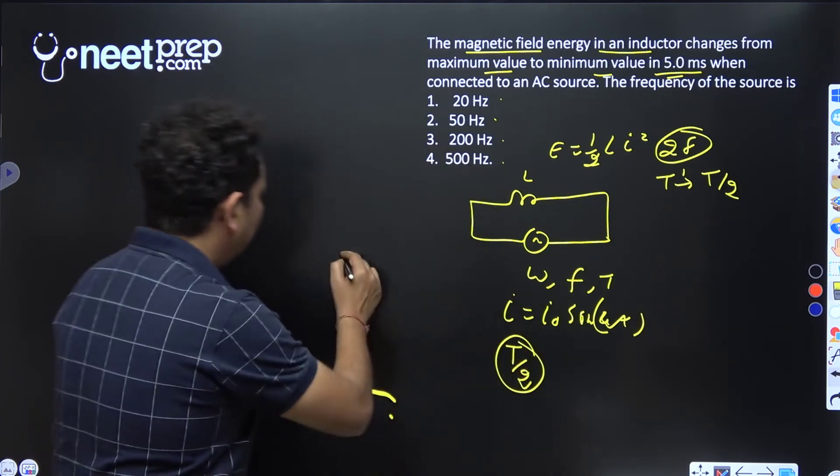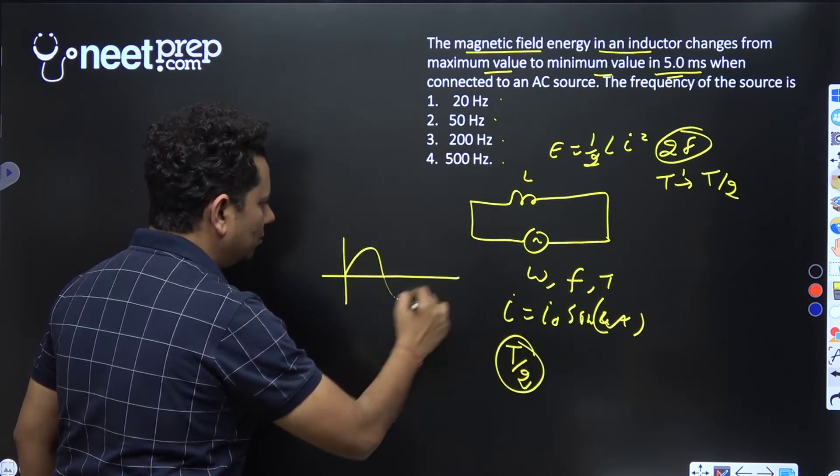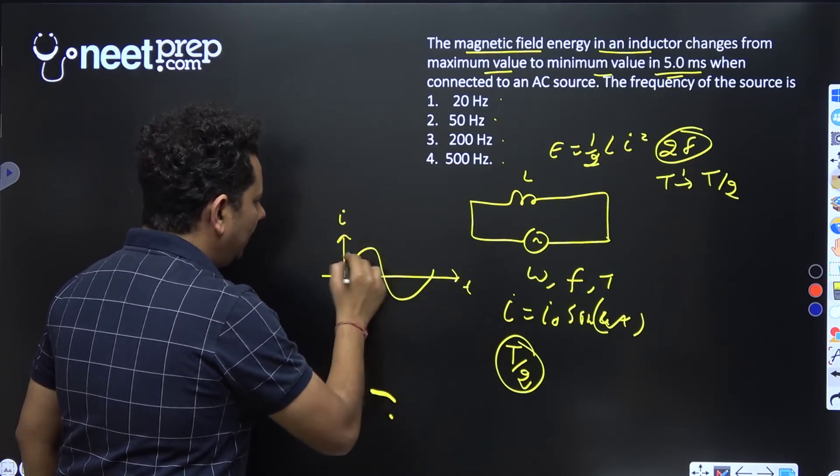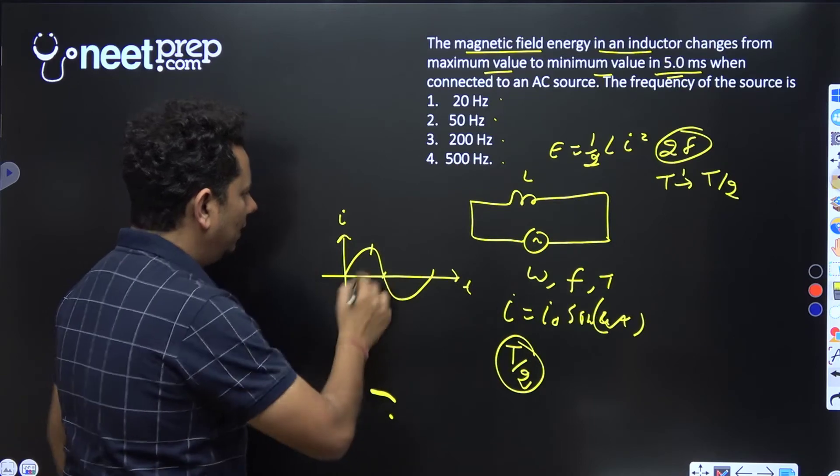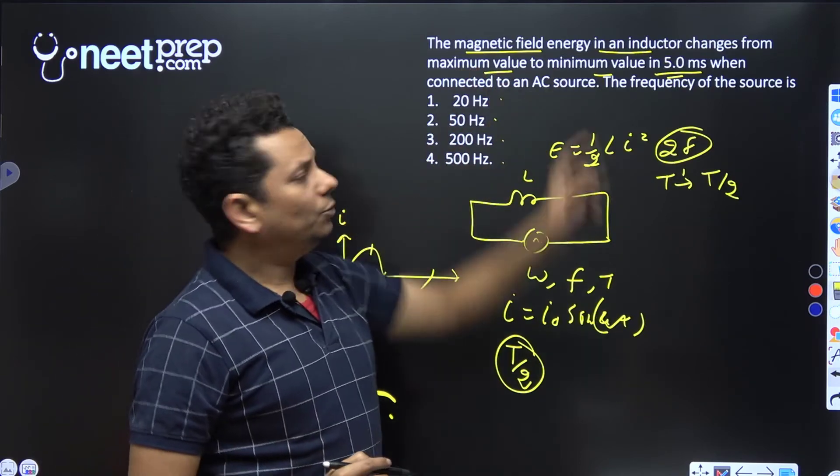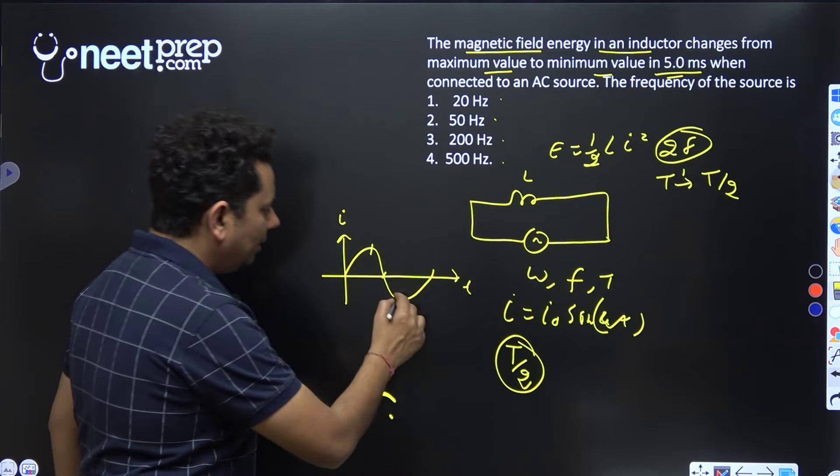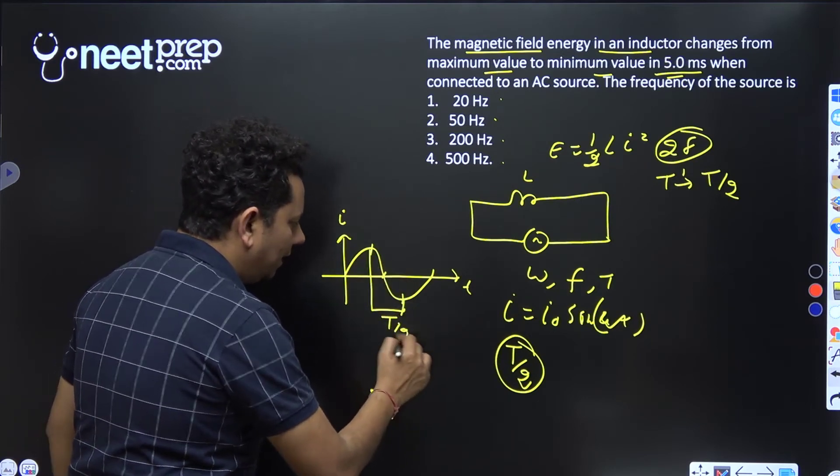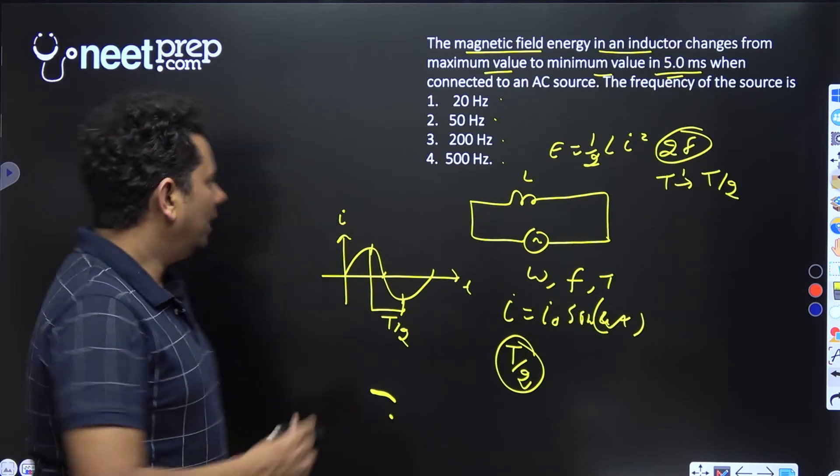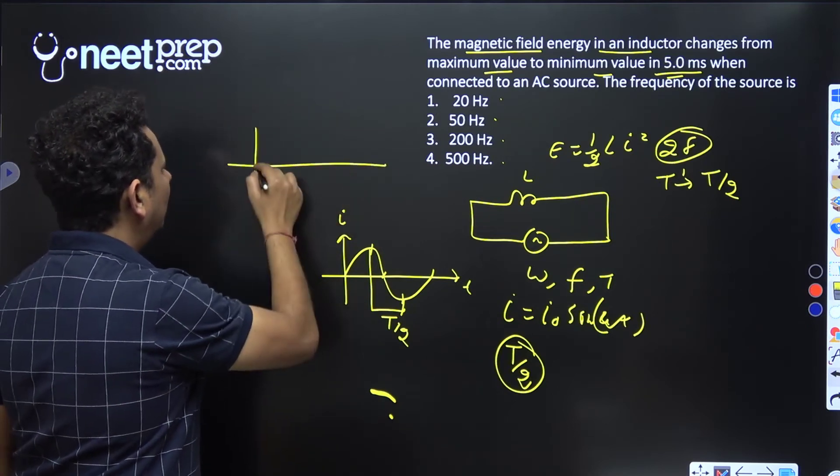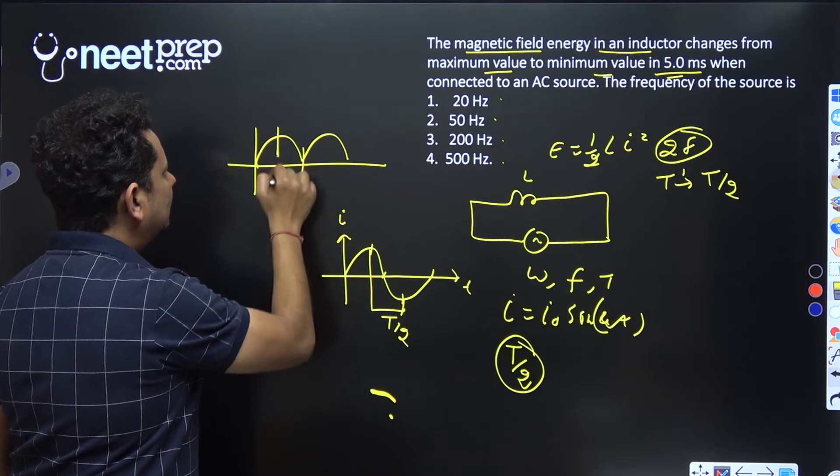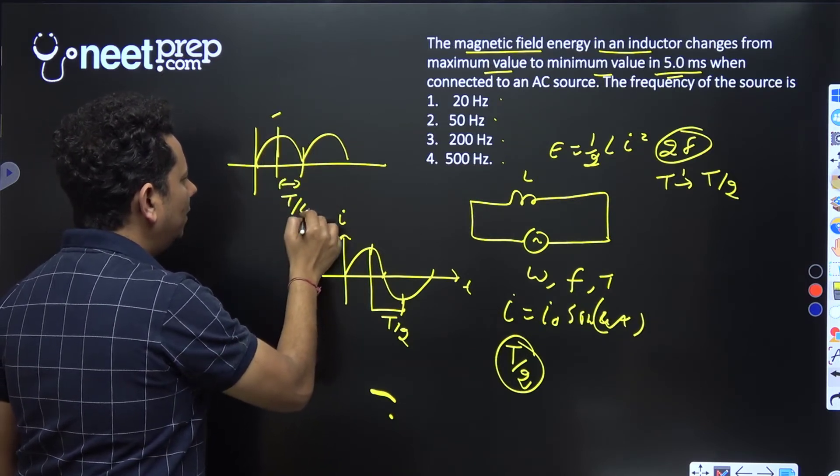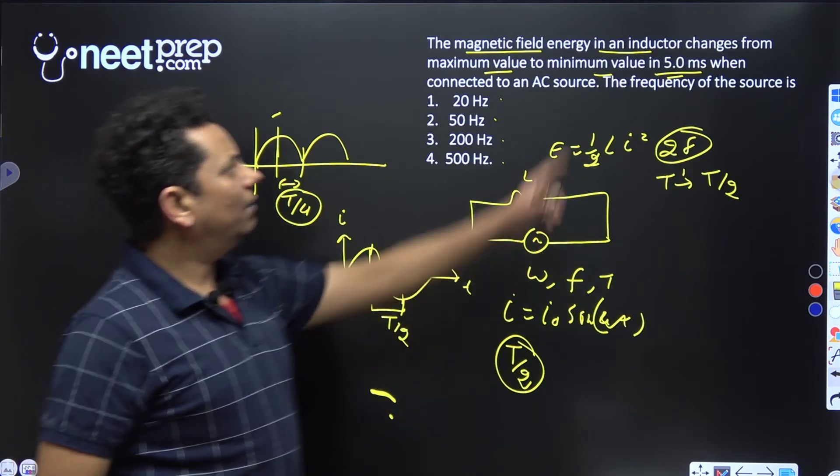This is a sinusoidal source with time period T. For going from maximum to minimum value in sin², the time taken is T/4. Therefore, T/4 is equal to 5 milliseconds.